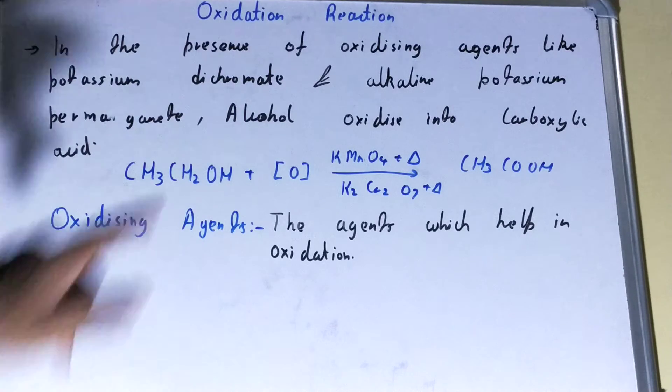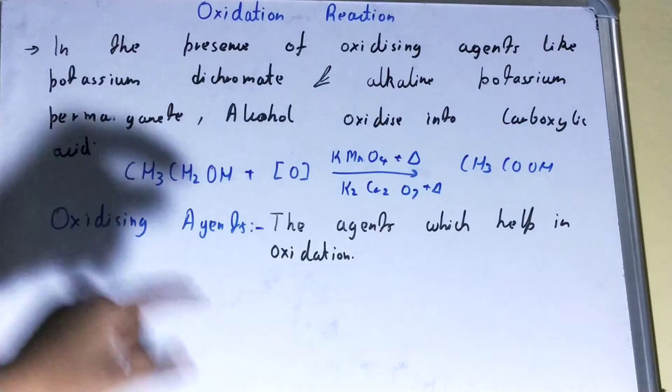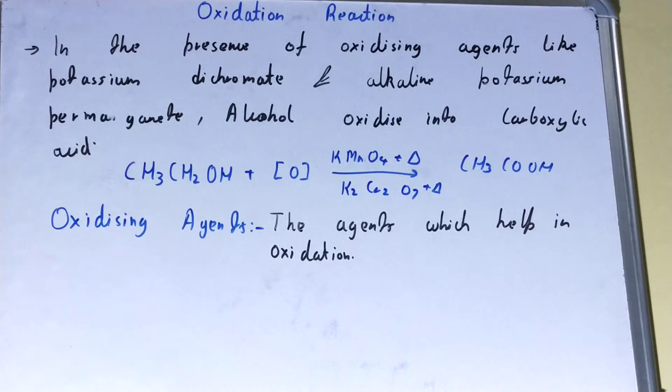permanganate, alcohol oxidizes into carboxylic acid. In simple words, the process of oxidizing alcohol into carboxylic acid in the presence of various compounds involves oxidizing agents. We can